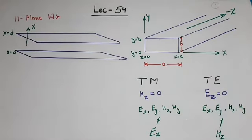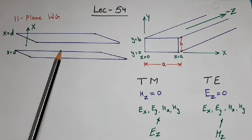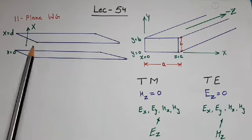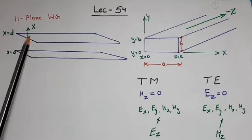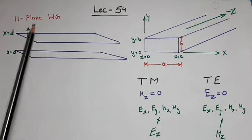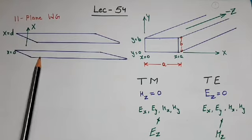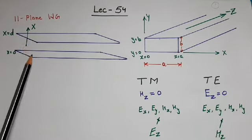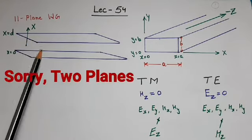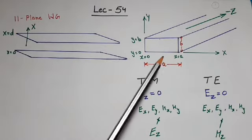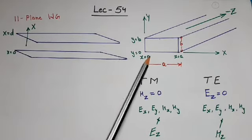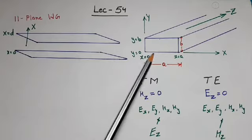Hello friends, welcome back. This is Himanshu Verma. Till now we have learned about parallel plane waveguide. In parallel plane waveguide there was restriction only in one side, that was along the x-axis. But this type of waveguide cannot exist practically, because practically we cannot place two waveguides parallel to each other without any support between them. That's why for practical purposes we generally use rectangular waveguide.